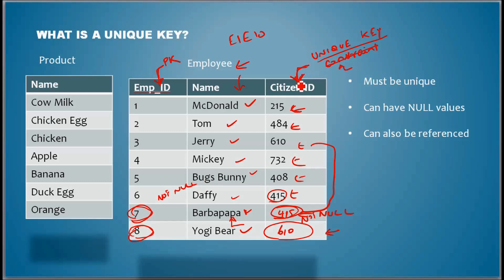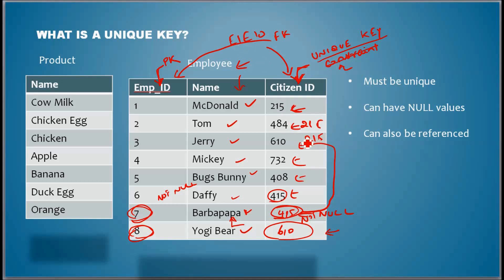Employee ID enforces uniqueness and also enforces not null. The foreign key we talked about in earlier videos can refer to a primary key or a unique key — it cannot refer to anything else. Imagine a column with hundreds of duplicate values; another column referring to that wouldn't make sense. So unique key enforces uniqueness but allows null values. That is the unique key.